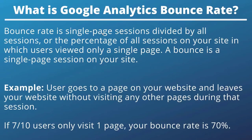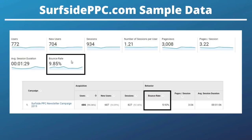For SurfsidePPC, I'd like to keep my bounce rate around 10%. If it goes up a little, it's not the end of the world, especially as I drive more traffic. Ultimately, what I try to optimize for are pages per session and average session duration, rather than just bounce rate. However, a higher bounce rate with an advertising campaign could signal that the campaign isn't performing well — but ultimately you need to look at conversion data.